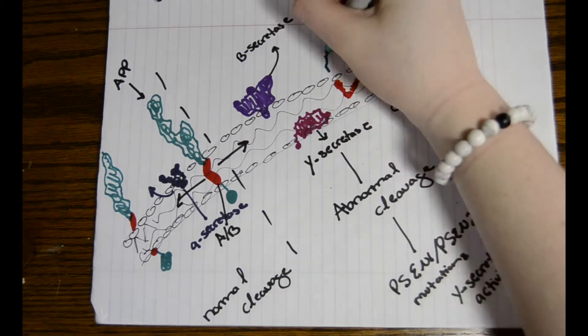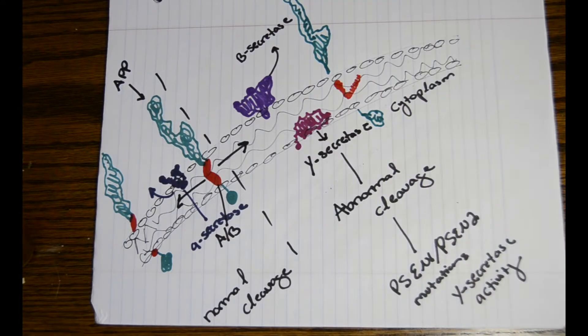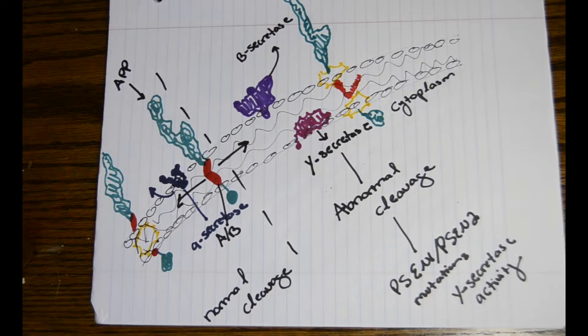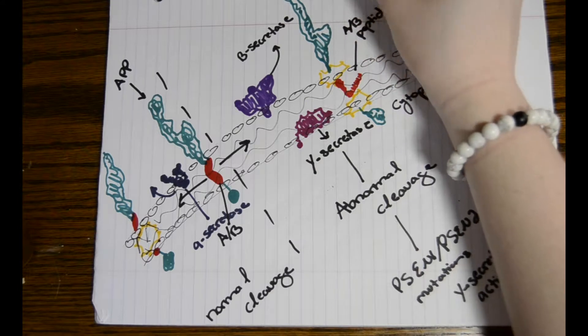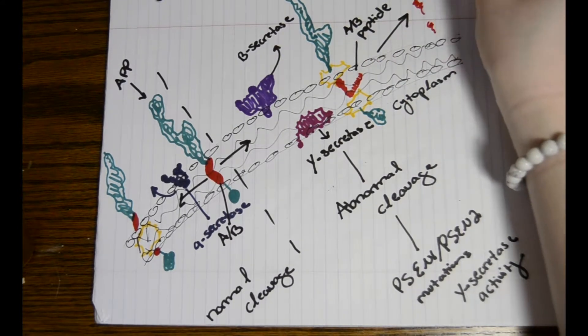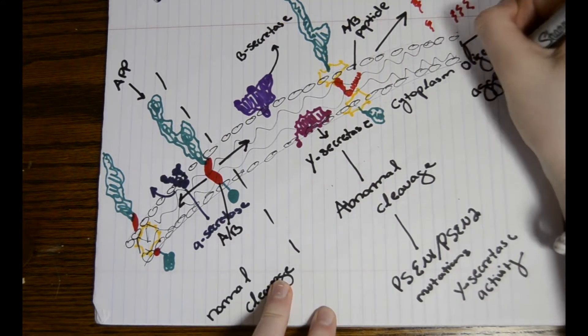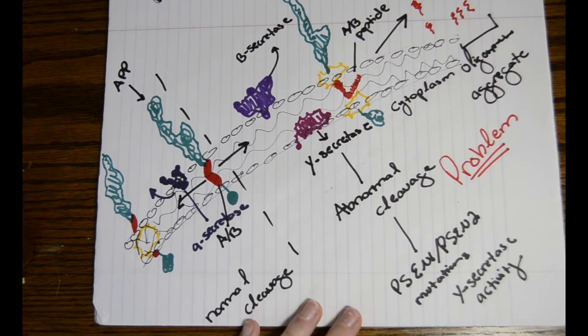This allows these peptides to clump together, since amyloid beta peptides are chemically sticky. This causes major problems in and around the neuron, such as neurotoxicity and neuronal death, that we will get into later in this presentation.